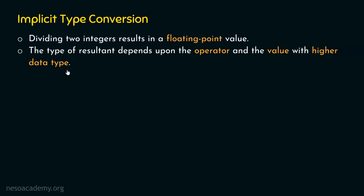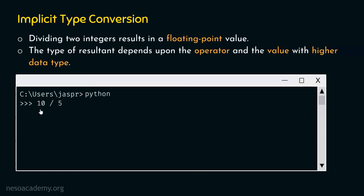Let's open the command prompt and type 10 divided by 5. These two are integer values with the division operator. If we hit enter, we get 2.0 as a result, not 2. Division by its very nature always results in a floating point value. The result here depends on the operator, not a higher data type, since both operands are the same type. Note this is normal division, not floor division — floor division would give an integer value.